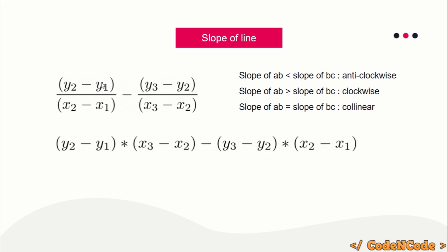We can rearrange this expression to avoid any division operation, because division can result in floating point values which are not as precise as integers. By cross-multiplying, we eliminate the division so the expression works with integers — be it long long or int. The sign of this rearranged expression determines orientation: if it is negative, the orientation is anti-clockwise; if positive, it is clockwise; if zero, the points are collinear.